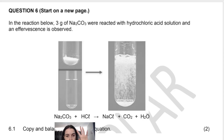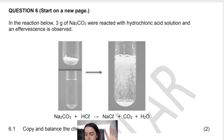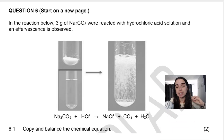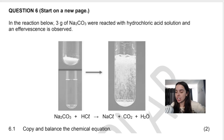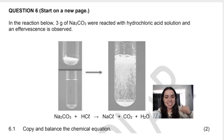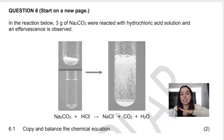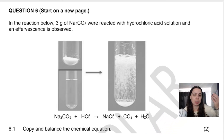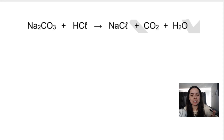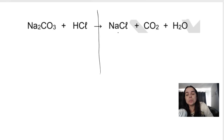First things first, even before you read the first question, you should see this equation and immediately your mind must go to: is it balanced? It has to be balanced in order for us to do stoichiometry, which actually comes later in this question. It's always good to make sure that your equations are balanced, and that's the first question here — copy and balance the chemical equation.